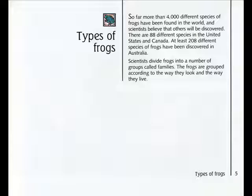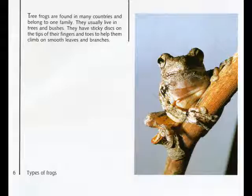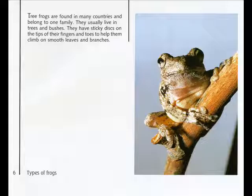Scientists divide frogs into a number of groups called families. The frogs are grouped according to the way they look and the way they live. Tree frogs are found in many countries and belong to one family. They usually live in trees and bushes, and have sticky discs on the tip of their fingers and toes to help them climb on smooth leaves and branches.